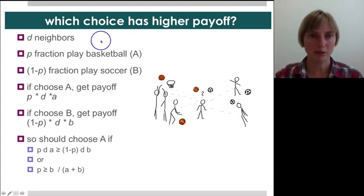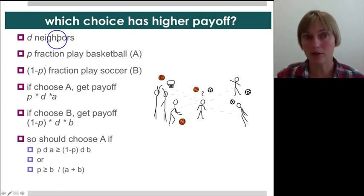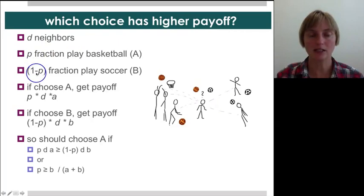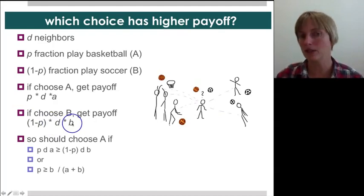Well, this is the formulation. He has D neighbors, or D friends, and a fraction P of them are going to play basketball. This is the three fifths, and one minus P fraction of them are going to play soccer. This is the two fifths. And if he chooses to play basketball, his payoff is the number of his friends who are playing basketball, which is just P times D, times A, which is the payoff he gets per each friend who plays basketball. Similarly, for soccer, the payoff, if he were to choose to play soccer, the payoff would be one minus P times D, that's the number of friends who are playing soccer, times B, the payoff he gets, or the enjoyment he gets from playing soccer with each of them.